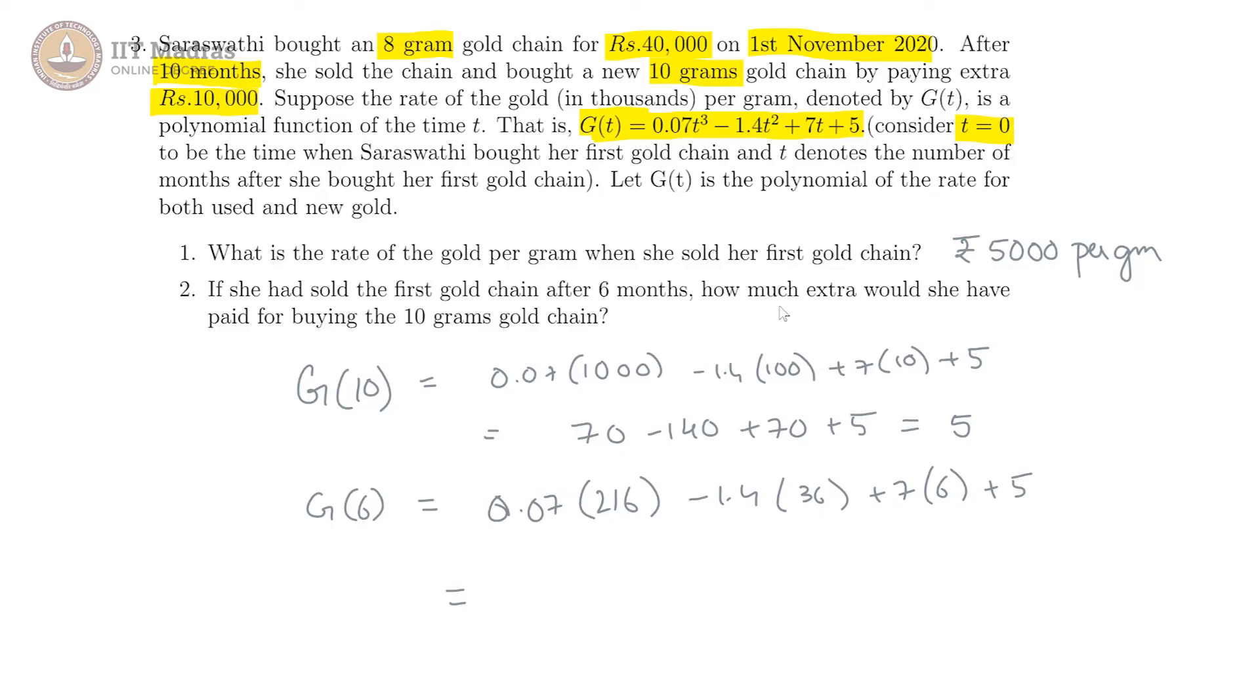And then we get, this is 15.12 minus 1.4 times 36 is 50.4 plus 42 plus 5, which is equal to 42 plus 5 is 47 plus 15.12, would give us 62.12. That is 62.12 minus 50.4, and that is equal to 11.72.